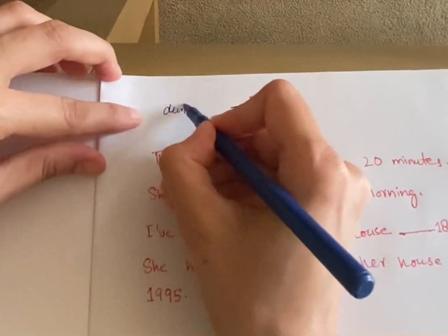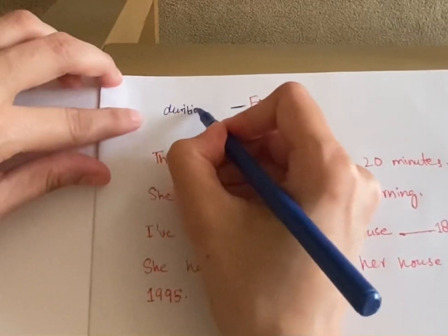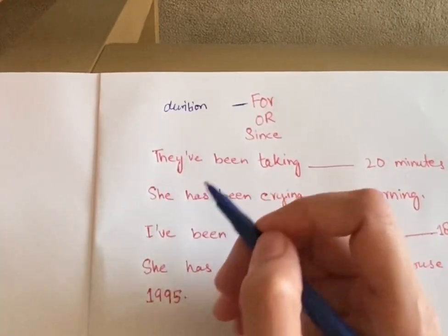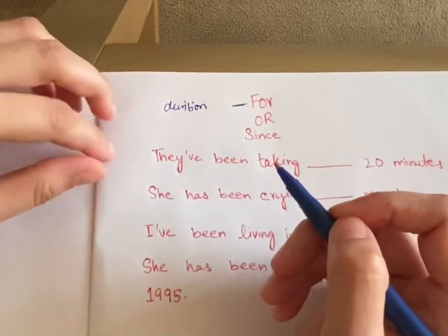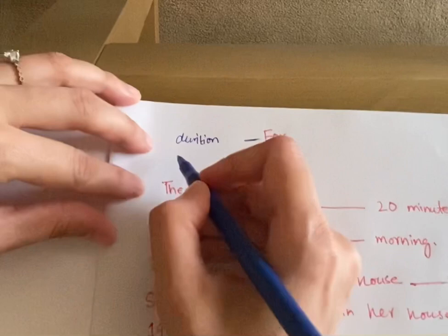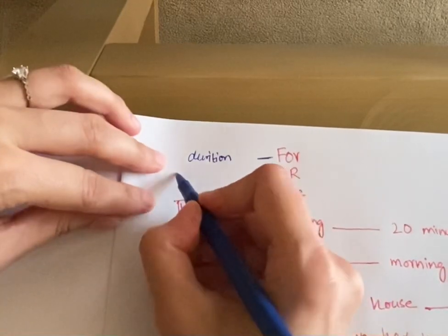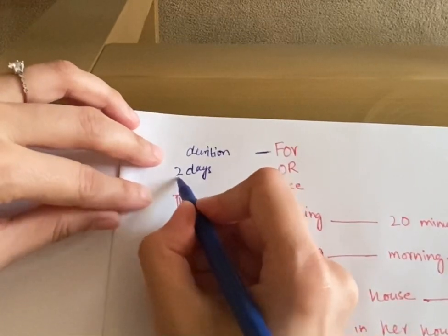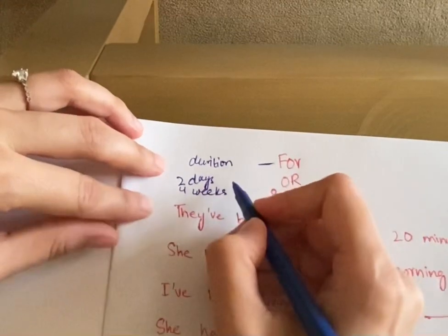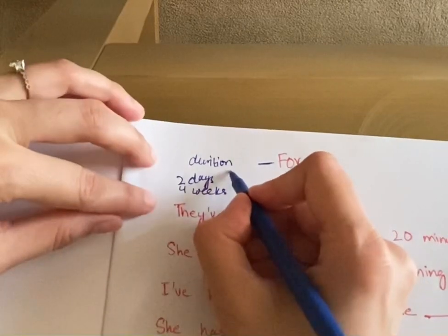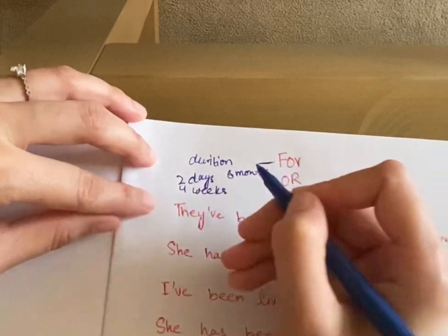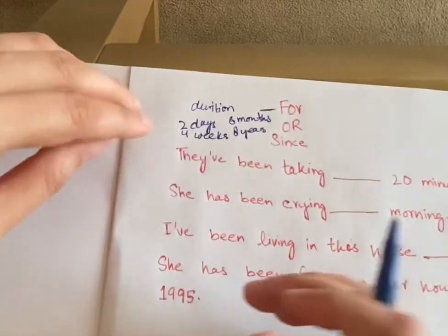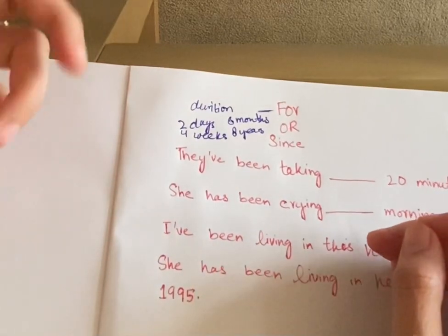We use 'for' when we are talking about a duration of time — a period in time where we are trying to tell how long something has been going on or happening. For example: 'for two days,' 'for four weeks,' 'for six months,' or 'for eight years.' We are just talking about a duration or period of time.